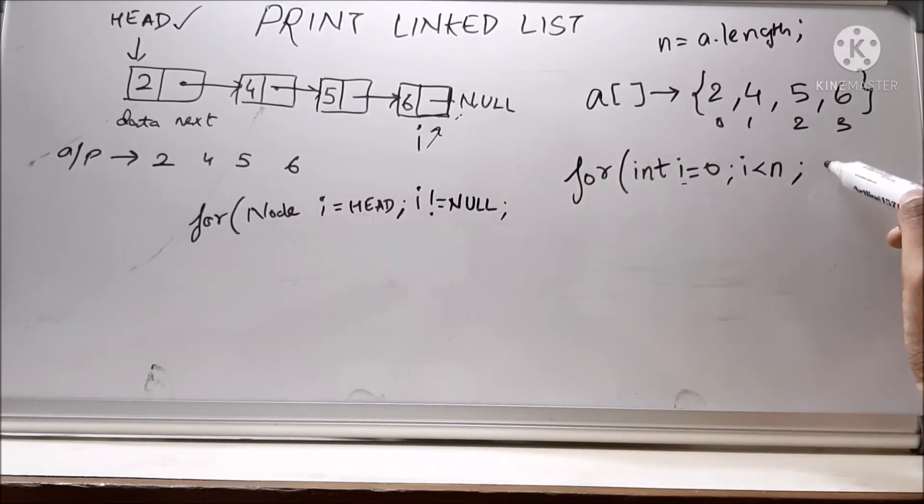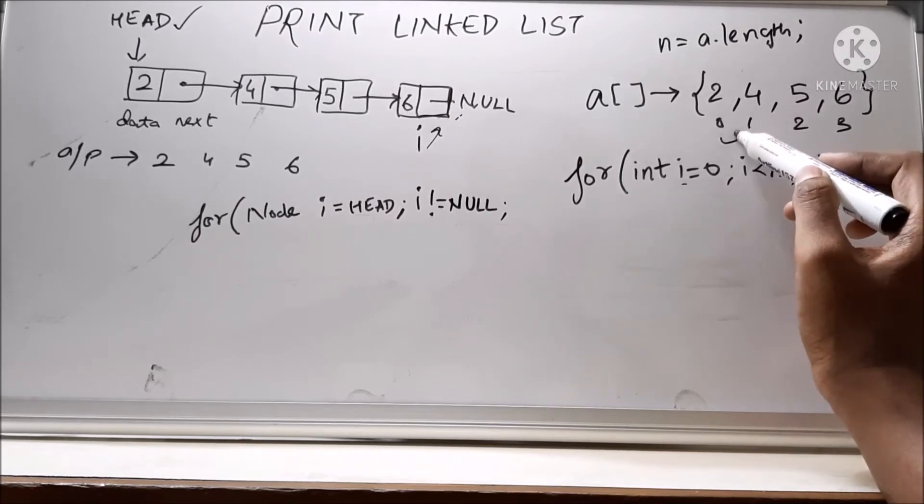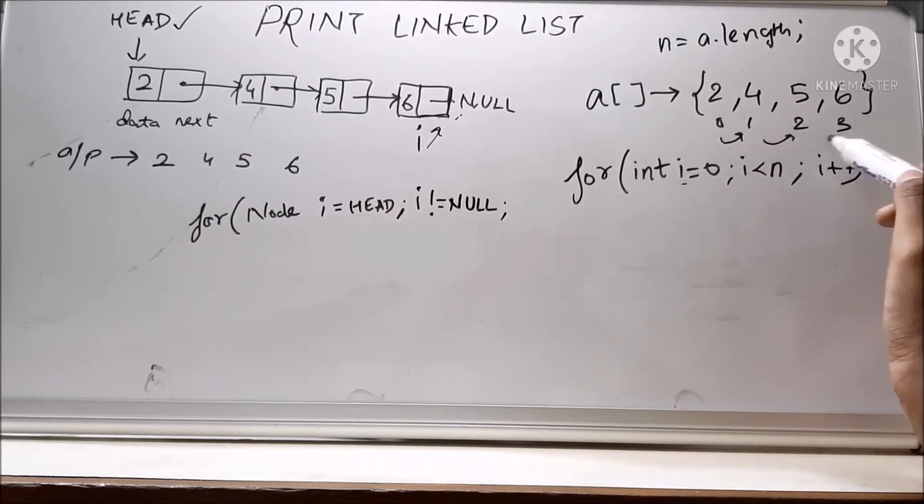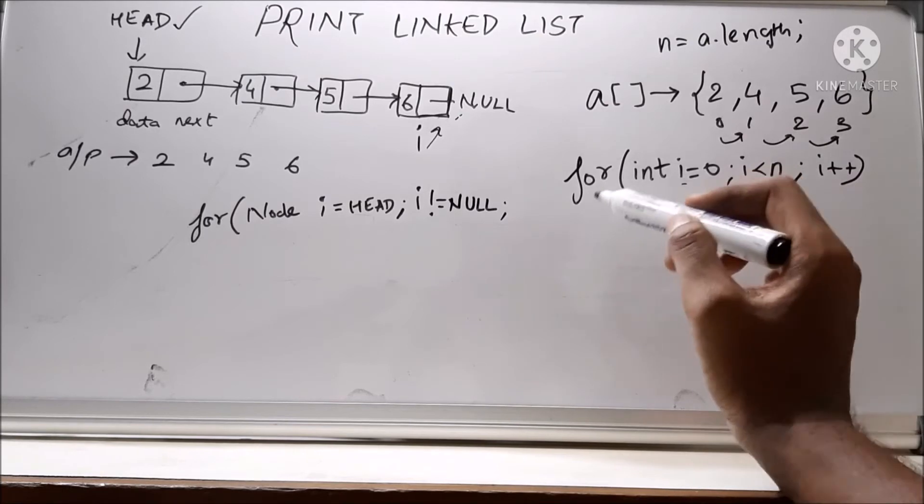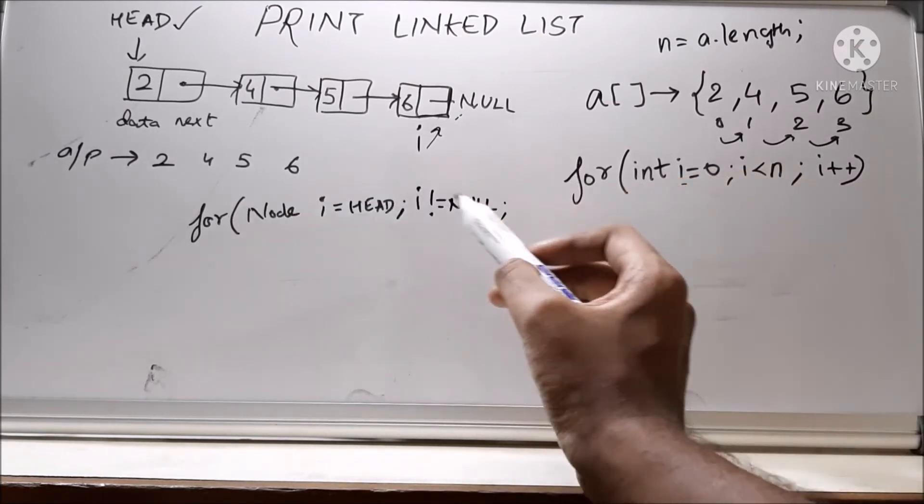Now, the last part is i++. We will be incrementing i by 1 in order to move to the next location, right? So this is how we used to do in a for loop. So for here, we have to do.